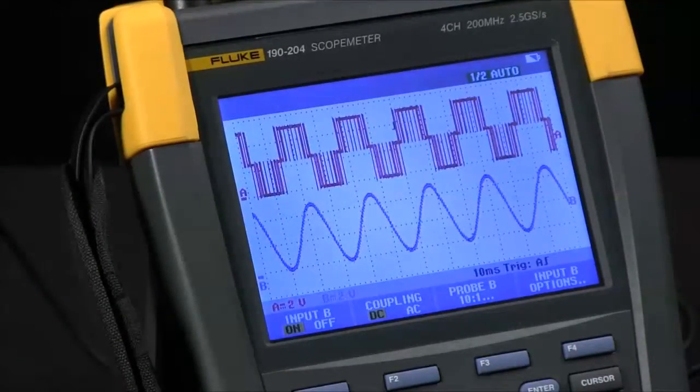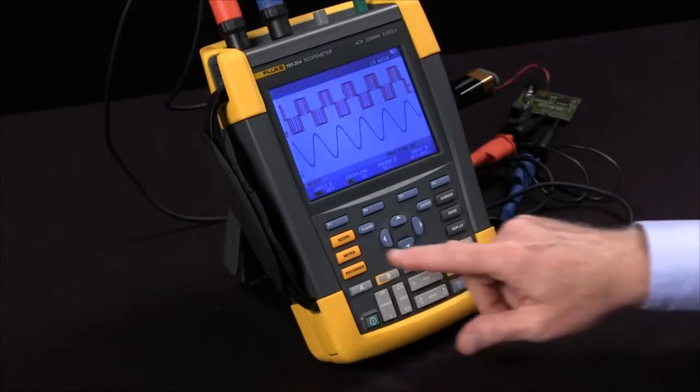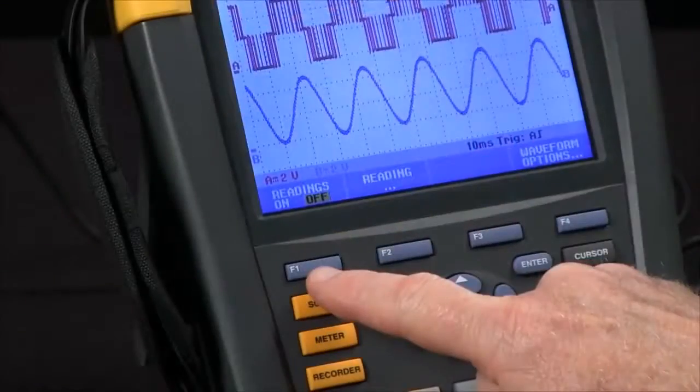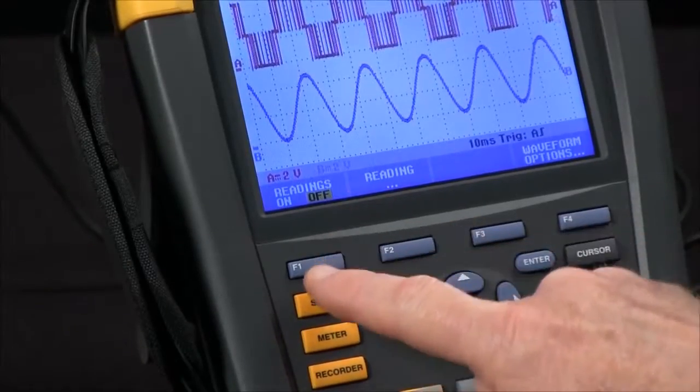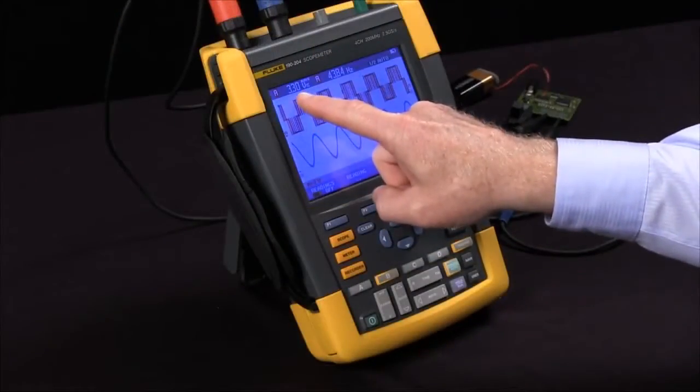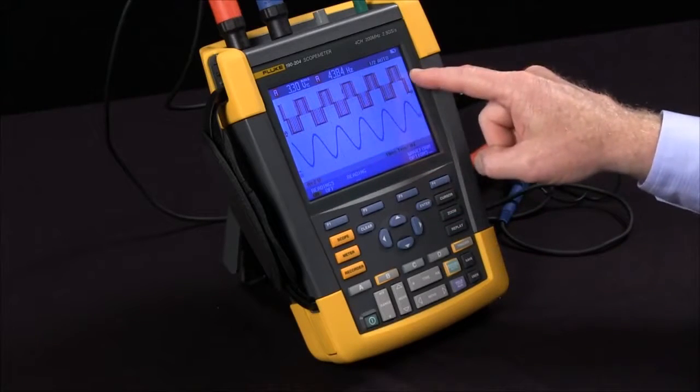The next thing I want to do is to make some measurements. If I hit the scope button I've got readings now for F1. They're turned off. F1 turns them on. I now see voltage and frequency for channel A.